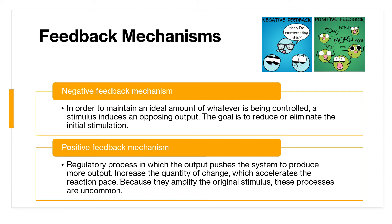Positive feedback processes are uncommon. In negative feedback, the goal is to reduce the initial stimulus, whereas in positive feedback it is the opposite — the output is produced in even greater amounts, amplifying the original stimulus.